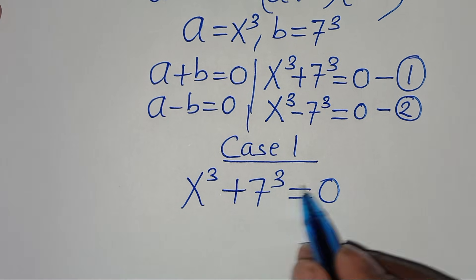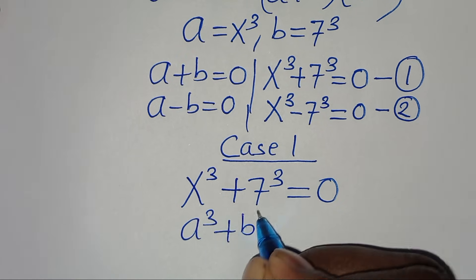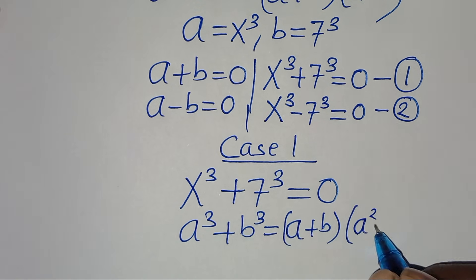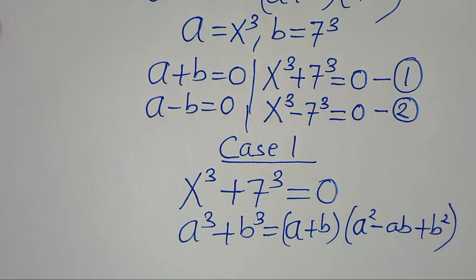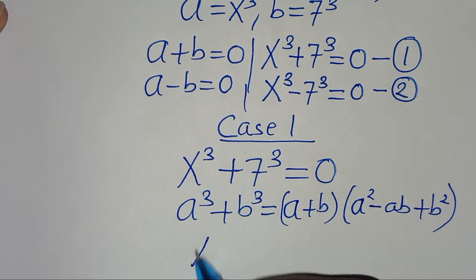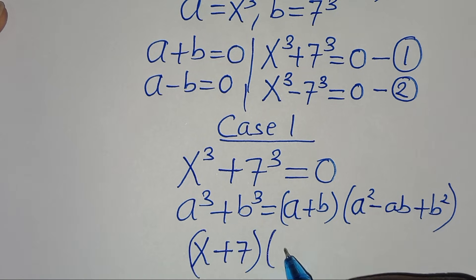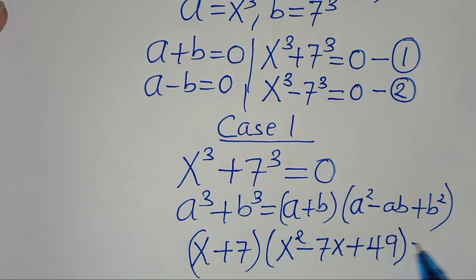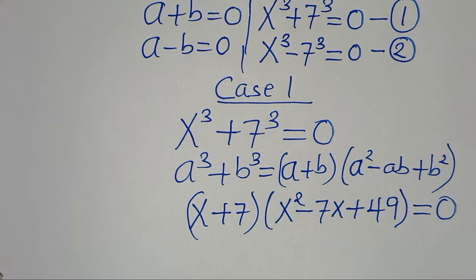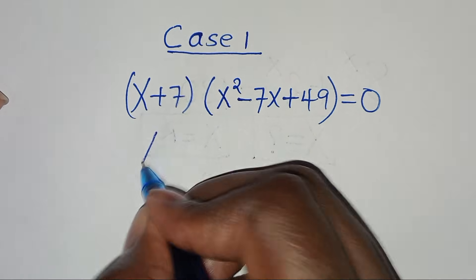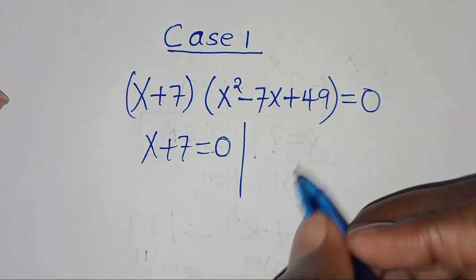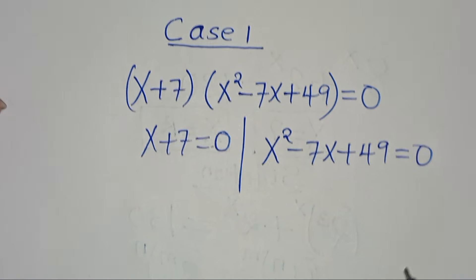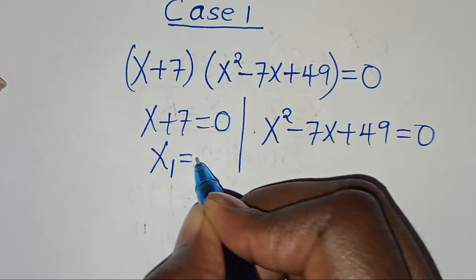In Case 1, we have x to the power of 3 minus 7 to the power of 3 equals 0. In Case 2, we have x to the power of 3 plus 7 to the power of 3 equals 0. This equation is of the form a cubed plus b cubed, which is the sum of two cubes, that we can express as a plus b into the parenthesis a squared minus a times b plus b squared. Applying this property, we have x plus 7 times x squared minus 7x plus 49 equals 0. So we have two parts: the first part is x plus 7 equals 0, giving us x1 is equal to minus 7.